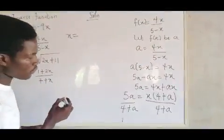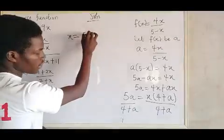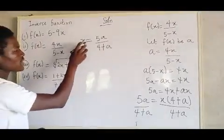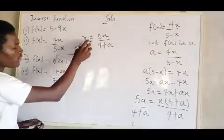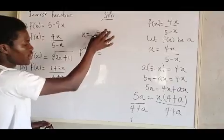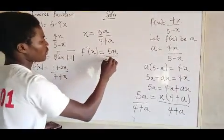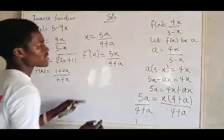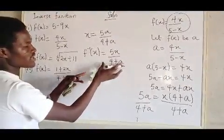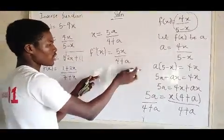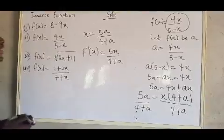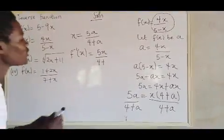The next thing to do is divide both sides by four plus Y, so X equals five Y over four plus Y. After getting X as the subject of the formula, you replace X with F inverse of X and anywhere you see Y you replace it with X. So F inverse of X equals five X over four plus X. You can see how the function has turned around — that is the inverse.